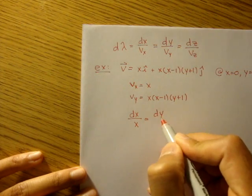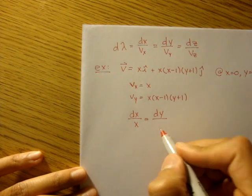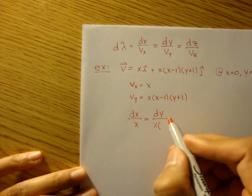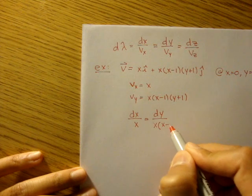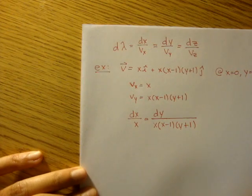And that's equal to dy over vy. And our vy is this thing. So it's going to be x times x minus 1 times y plus 1. Let's extend this line a little bit.